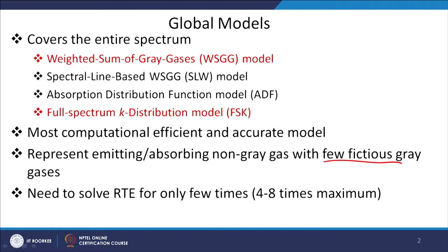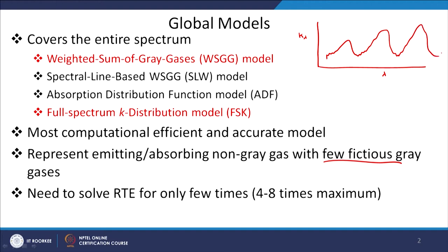Global models are the most computationally efficient models in radiative heat transfer calculation. To clarify what we mean by fictitious gray gas: suppose we have a spectrum of absorption coefficient that varies, with some rotational bands and so on. What we do is represent this non-gray absorption coefficient — which is varying — in the form of a few gray absorption coefficients. So we represent the non-gray absorption coefficient as a combination of gray absorption coefficients.